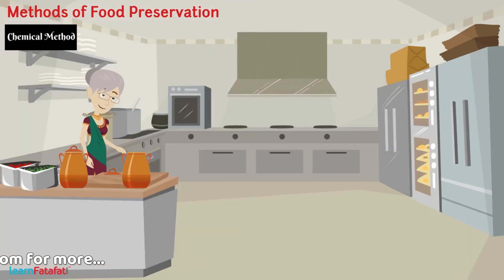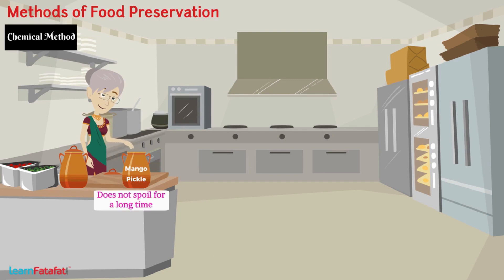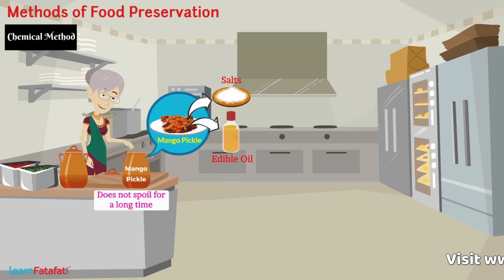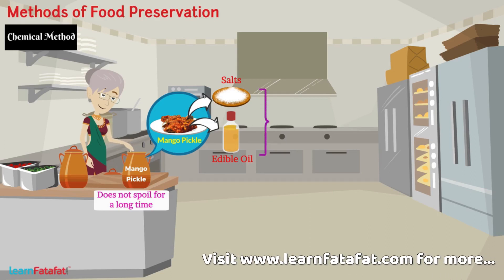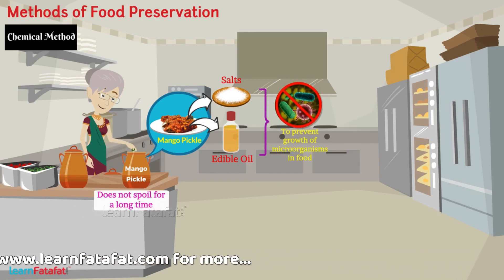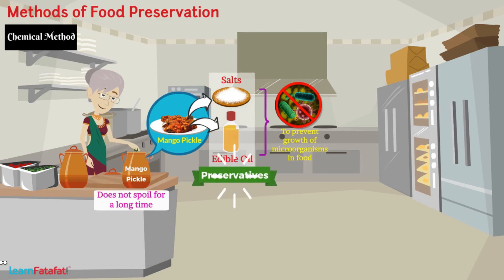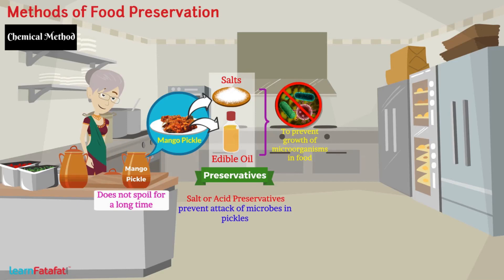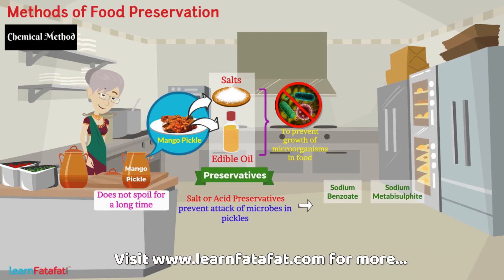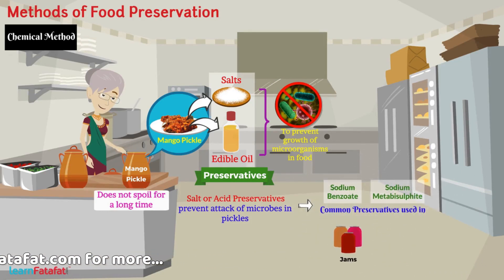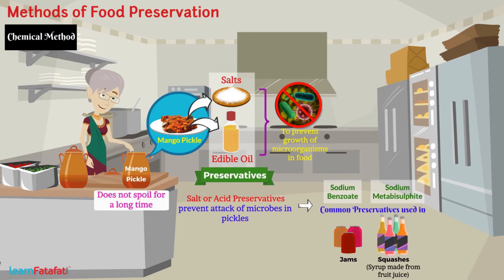Chemical method. In our households, grandma makes mango pickle which does not spoil for a long time. Why is it so? Because it contains salts and edible oil. These are the common chemicals to prevent growth of microorganisms in food, and they are called preservatives. Salt or acid preservatives prevent attack of microbes in pickles. Sodium benzoate and sodium metabisulphite are common preservatives used in jams and squashes to check their spoilage.